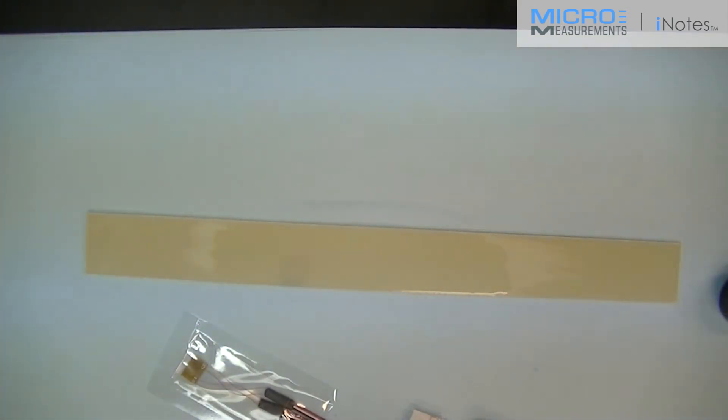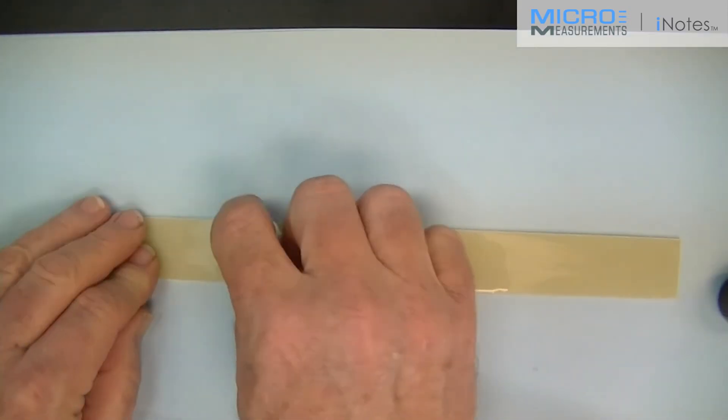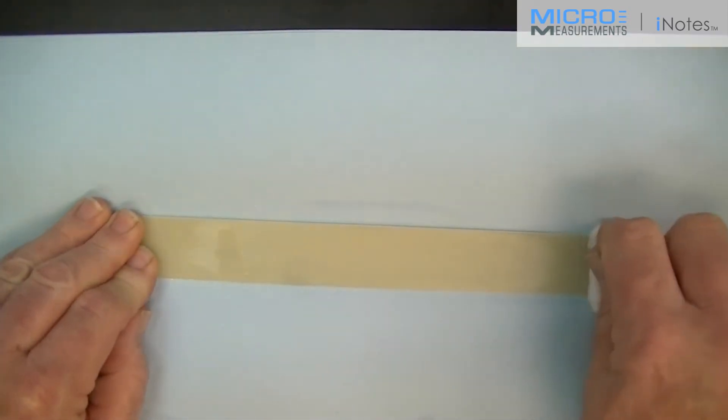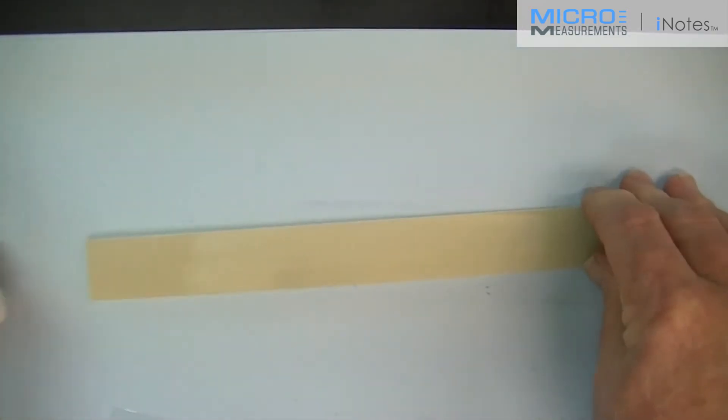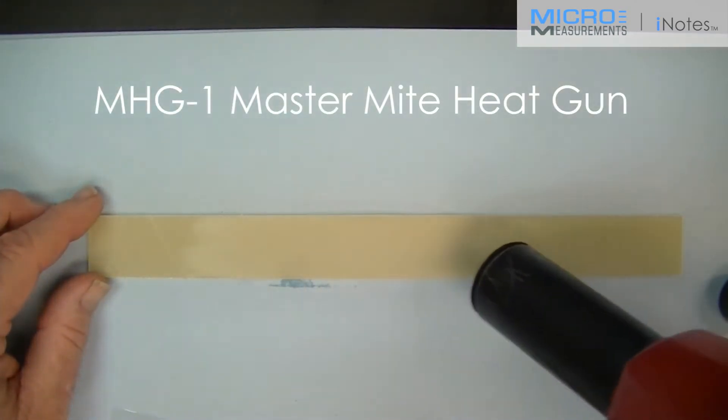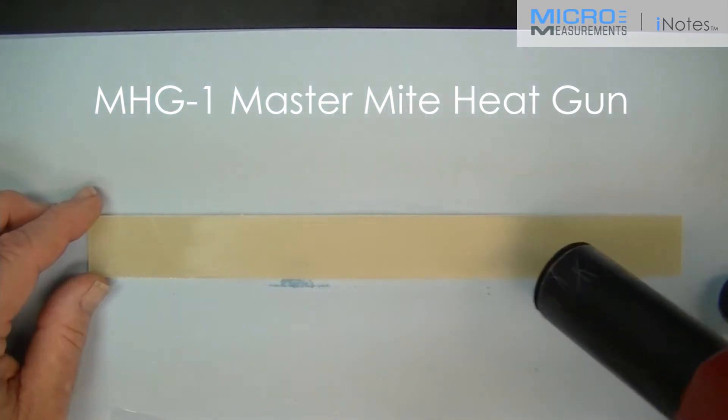I'm now going to take a dry gauze sponge, fold it into quarters, and with a single wiping motion absorb the excess material off the beam. Because this is a composite material and they are fairly hygroscopic, we want to make sure we get rid of all this Neutralizer 5A. So I'm going to use a warm air blower and I'm going to dry the surface of the beam extra.